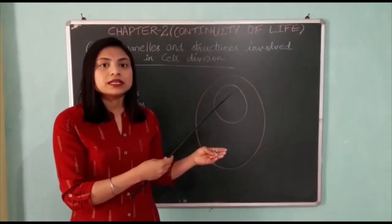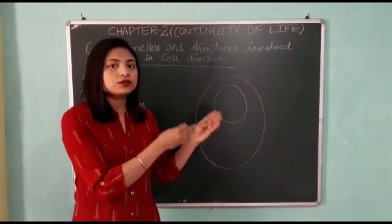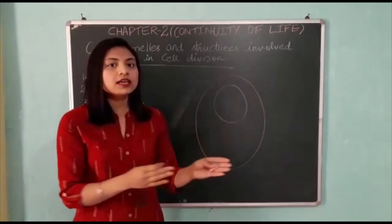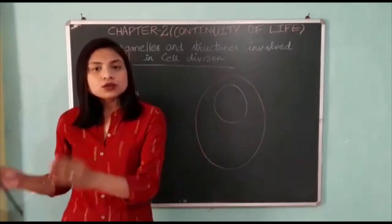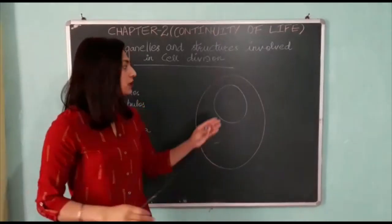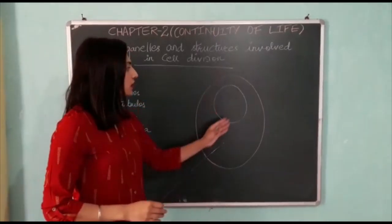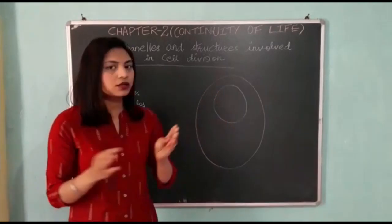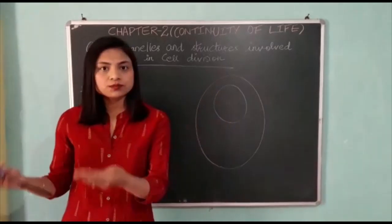This is the nucleus at different stages of cell division. You can see this shape — this is a disorganized shape of the nucleus.